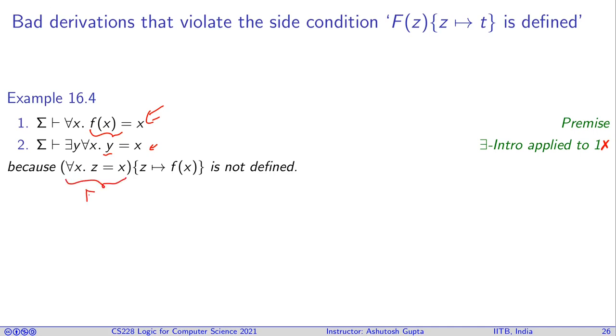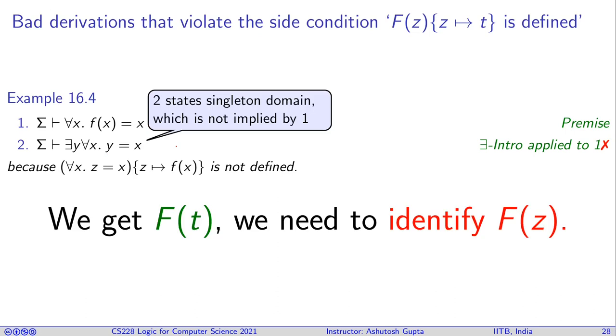And your choice of F(z) was this and then when you took z out and put F(x) in, at that time you violated the definedness of substitution. Therefore, this derivation is not allowed. So, important point is that when you have an antecedent and the consequence when you have F(t) appearing in the antecedent and F(y) appearing in the consequence, we don't have F(z) given to us. F(z) is our choice. We make a choice of F(z) and then we apply the rule.